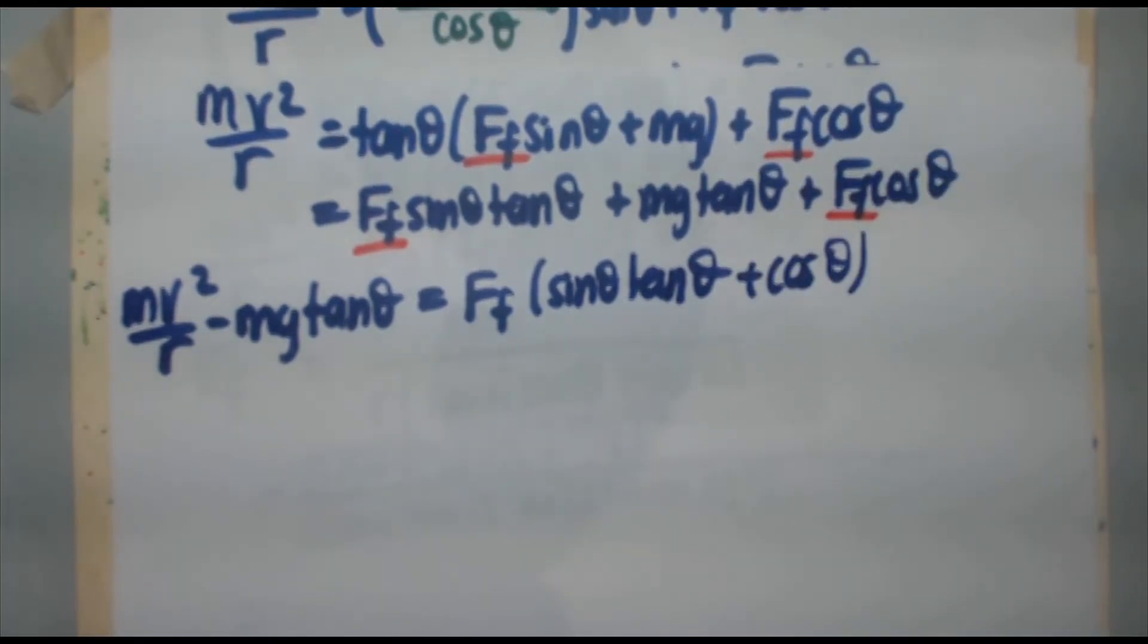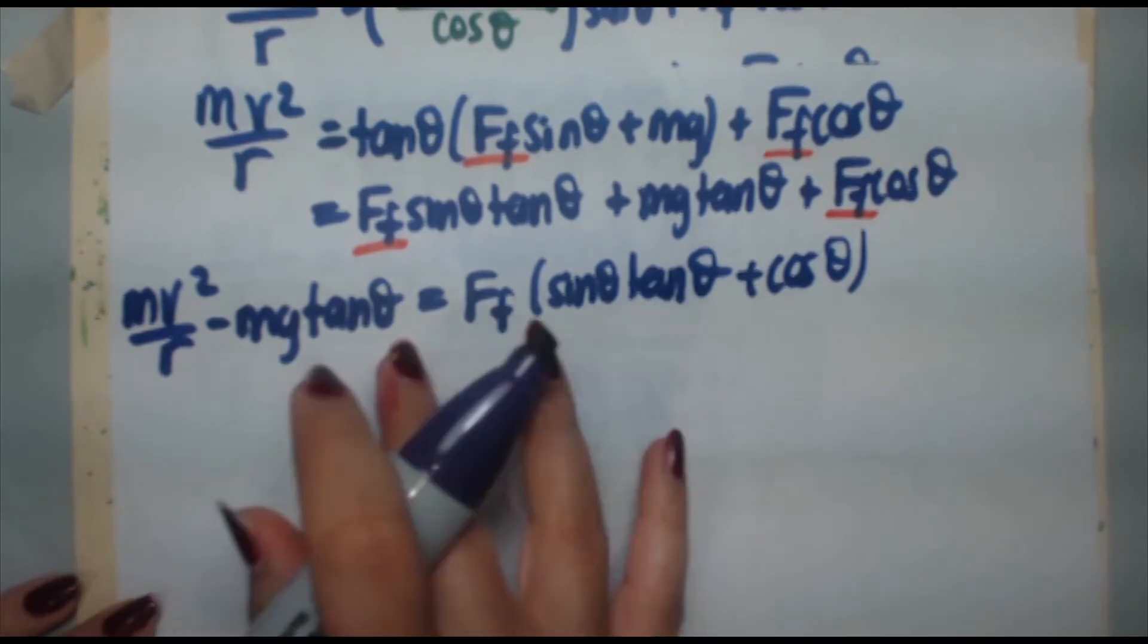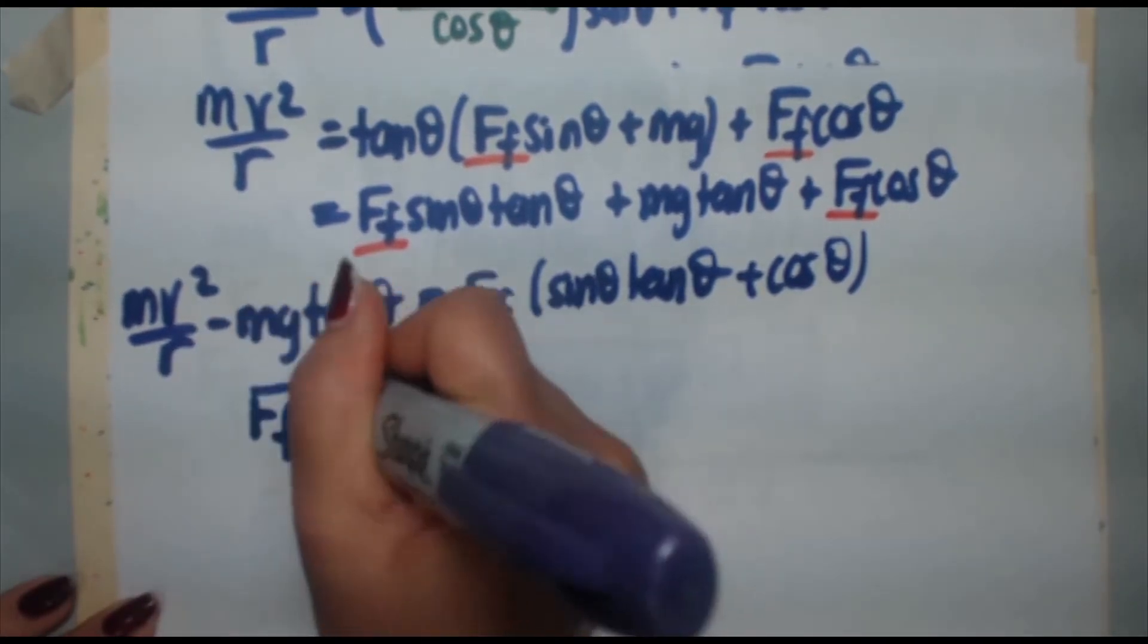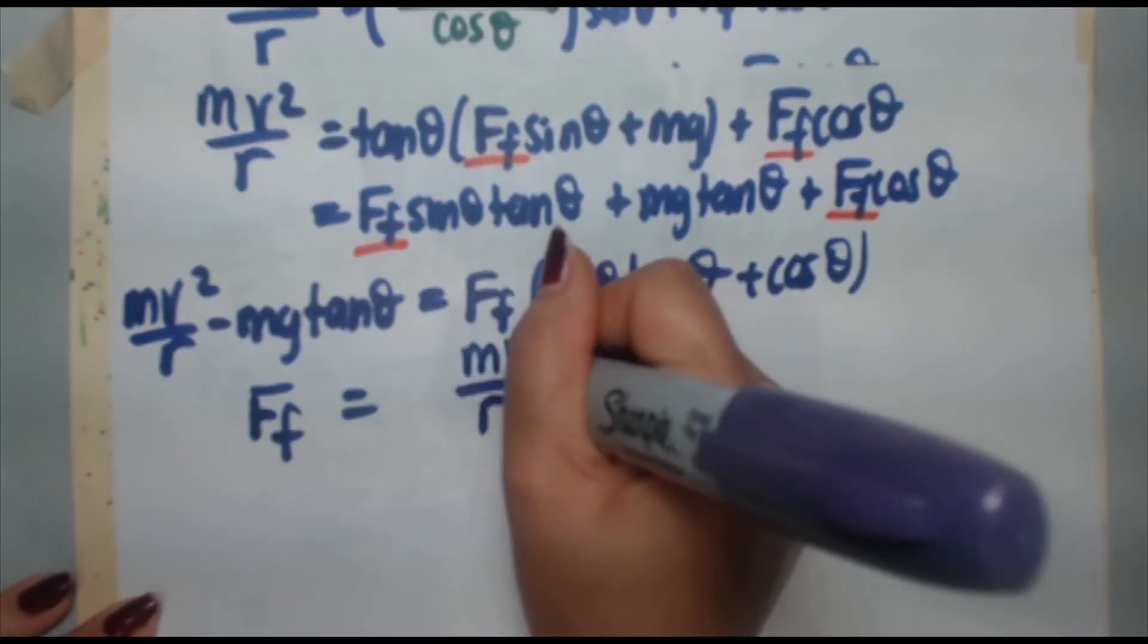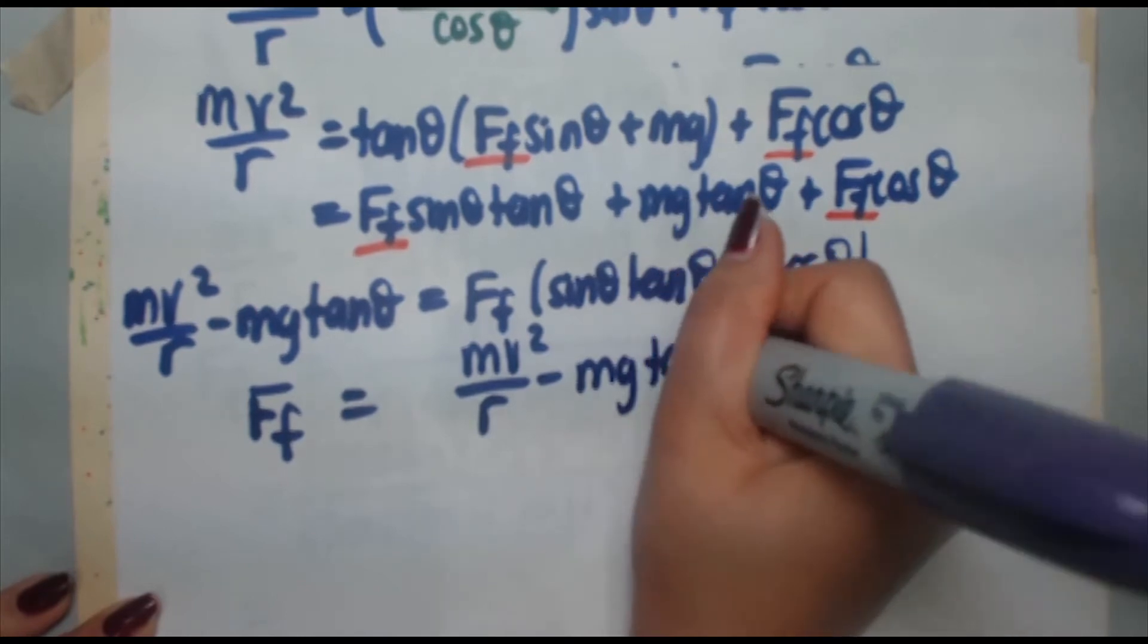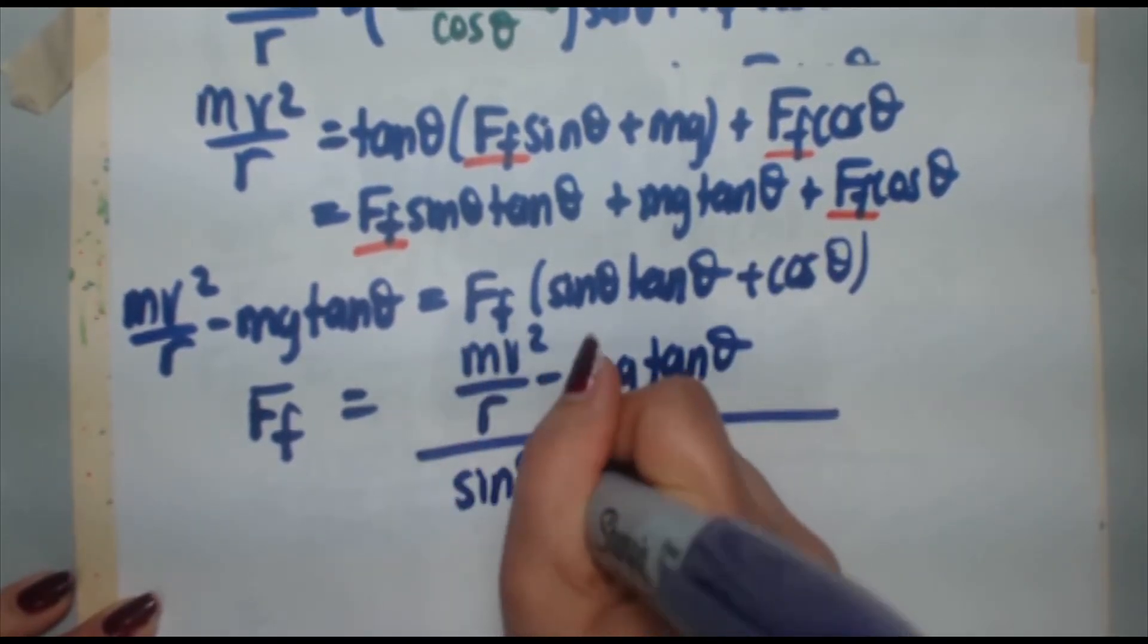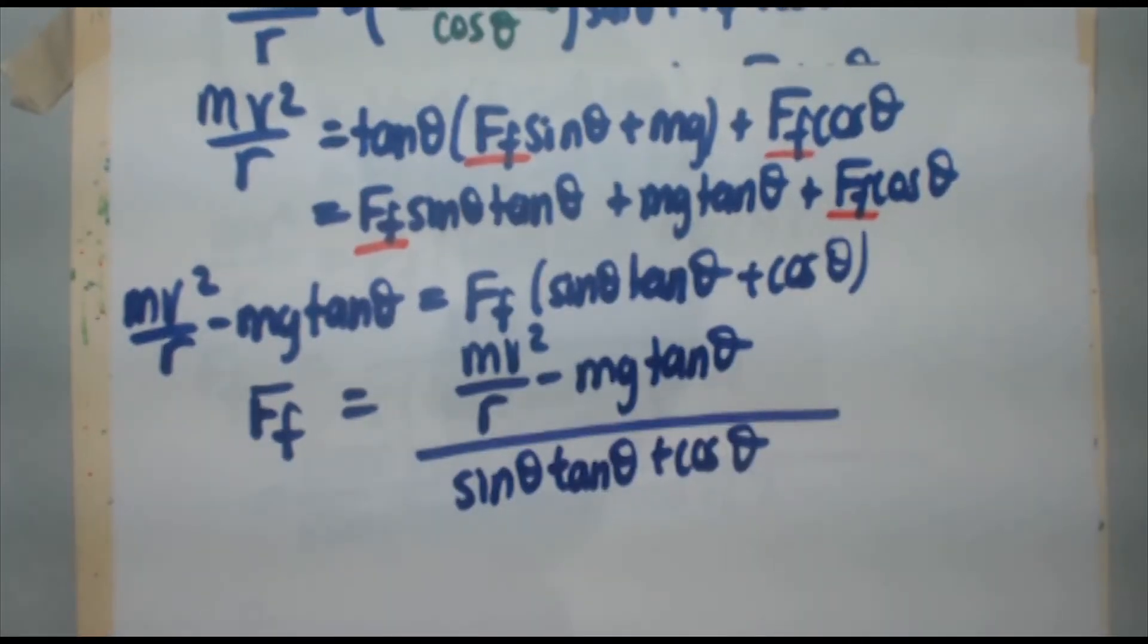Let's collect our Ff's. I'm going to factor that out. I'm going to bring the mg tan theta to the left. So therefore I get mv squared over r minus mg tan theta equals, factor out the force of friction, sine theta tan theta plus cos theta. Now to get Ff by itself, you have to divide both sides by this expression. Ff equals mv squared over r minus mg tan theta divided by sine theta tan theta plus cos theta. And there is my expression for force of friction.